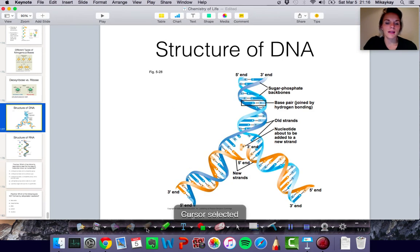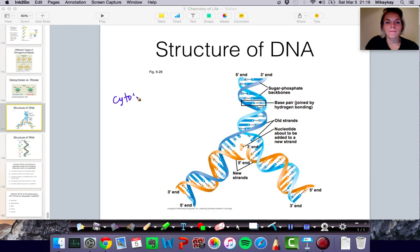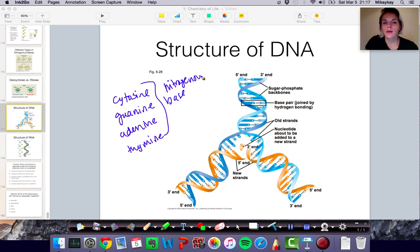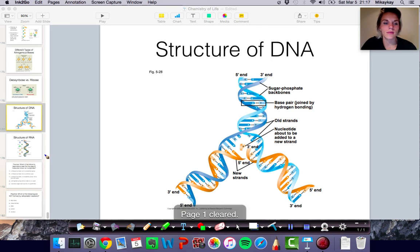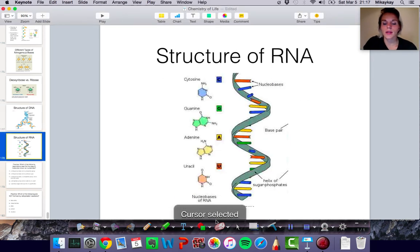So that is the main difference in terms of the nucleotides between DNA and RNA. DNA has cytosine, it has guanine, it has adenine, and it also has thymine. And these are all different types of nitrogenous bases that make up the nucleotides. So the difference between DNA and RNA in terms of the nitrogenous bases is that DNA has thymine, however, RNA has uracil in the place of thymine.